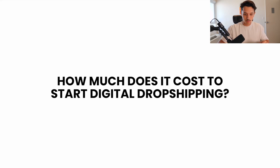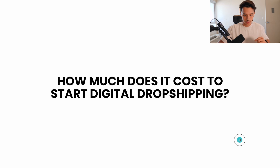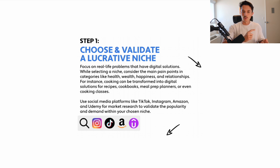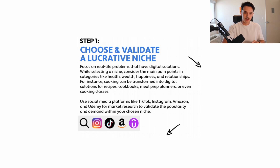So without further ado, let's hop onto my computer. I just made this quick little slide and it starts off with step number one right here. The very first step to getting results with digital dropshipping is choosing and validating a niche. So usually what we do with this is we're looking for pain point categories: health, wealth, happiness, or relationships.